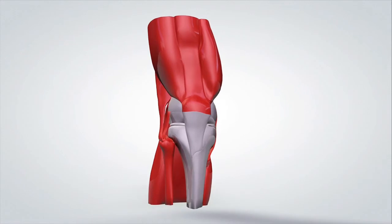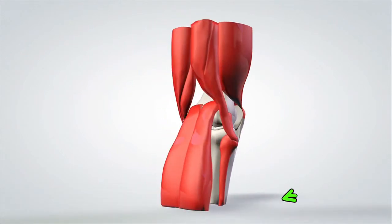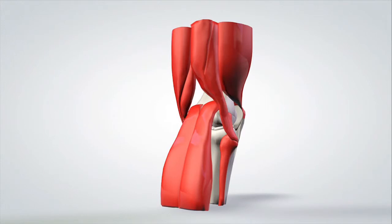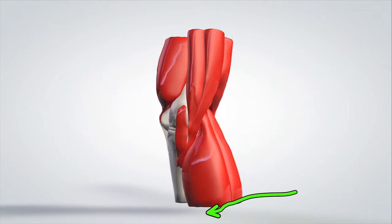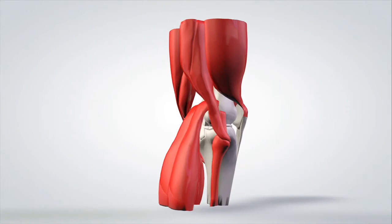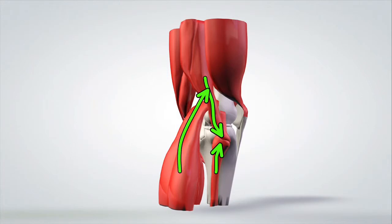Now let's go over the hamstrings — a lot of times issues in this area are addressed wrong. You have two parts of the hamstrings: you can see one comes down and wraps around, attaching to the lower leg on one side, and the other attaches on the other side. Note how the muscle from the lower leg comes up and attaches in the same area. Everything is interrelated — your calves come up above your knee and your hamstrings cross and come below, so they are interrelated.